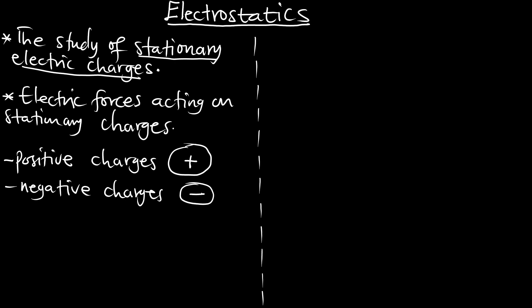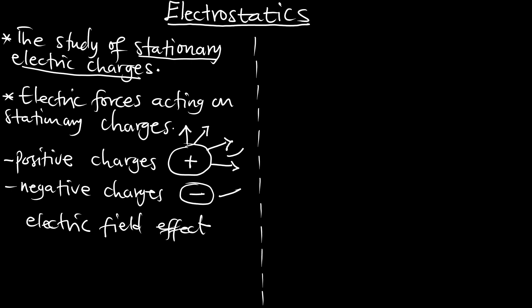These charges are going to exert some force onto their surroundings and it is going to affect everything around them. We will dive deep into how the positive and negative charges behave. As these charges exist, there is some influence they are going to have on their surroundings, and this is what we call the electric field effect. The effect of the charge on its surroundings is what we call the electric field effect.